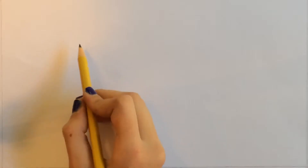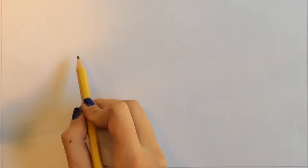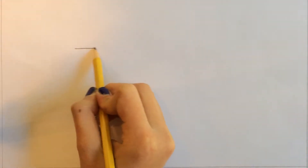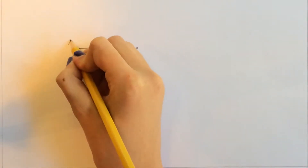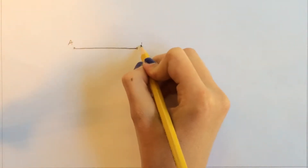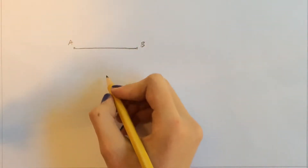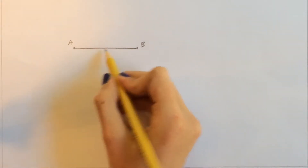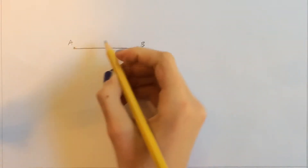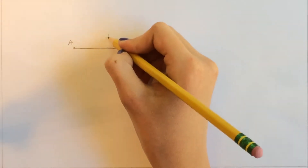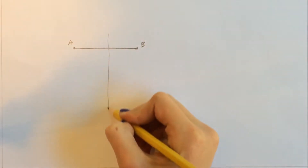Hello, today I'm going to show you a couple of proofs with perpendicular bisectors. So in our first proof, we have segment AB and we have its perpendicular bisector right here.